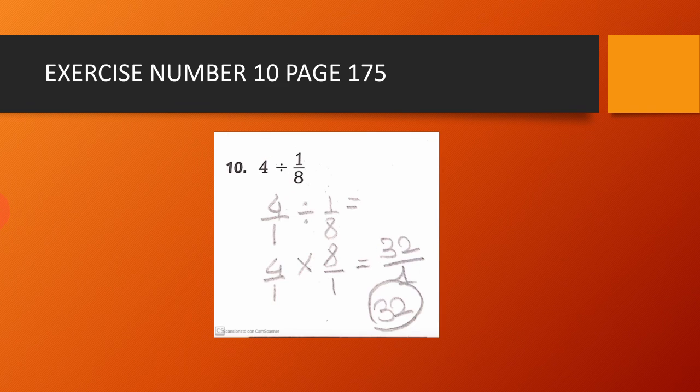Exercise number 10, page 175. We have 4 divided by 1 over 8. We write the 4 as a fraction: 4 over 1 divided by 1 over 8. Now we use the rule: keep, change, flip. So we have 4 over 1 times 8 over 1. 4 times 8 equals 32, and 1 times 1 equals 1. So the result is equal to 32.